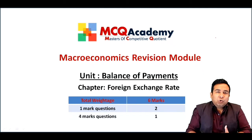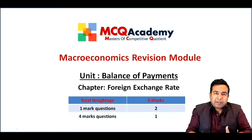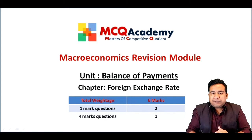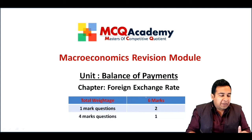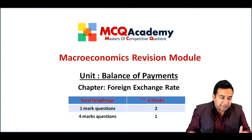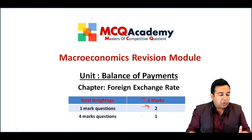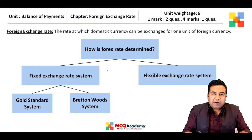With this video we start the unit of Balance of Payments. This unit carries two chapters: one is Foreign Exchange Rate and the other is Balance of Payments. The weightage of this unit is six marks for your board exam — two questions of one mark each and one question of four marks each.